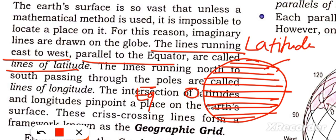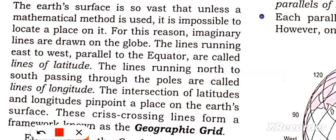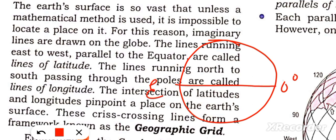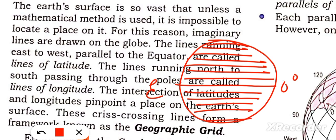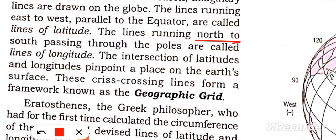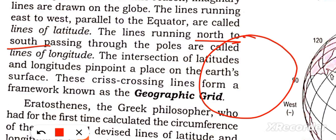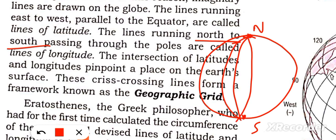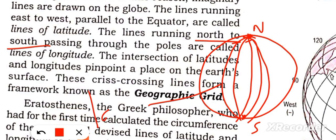On the globe, there is a line called the zero degree equator, and in parallel to this equator you will find more lines — these are latitudes. There are also some lines which run north to south, from the North Pole to the South Pole, as semi-circles, and these we call longitudes.